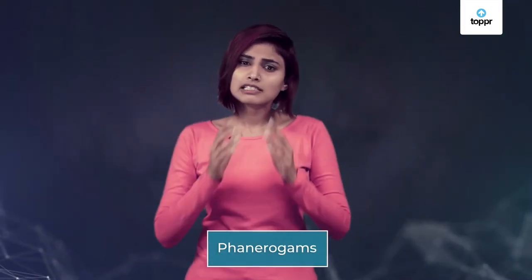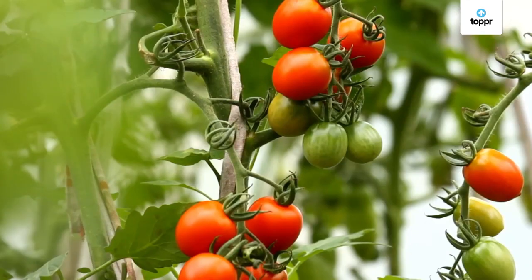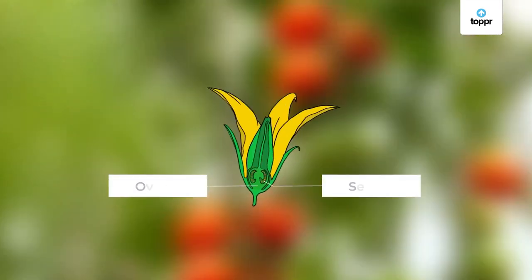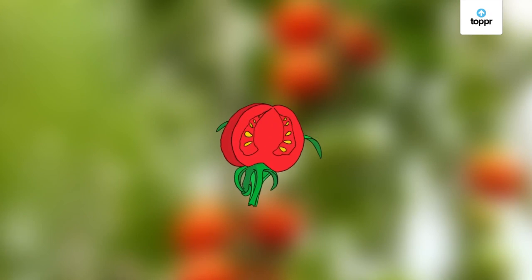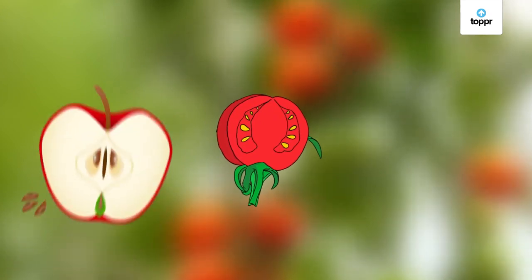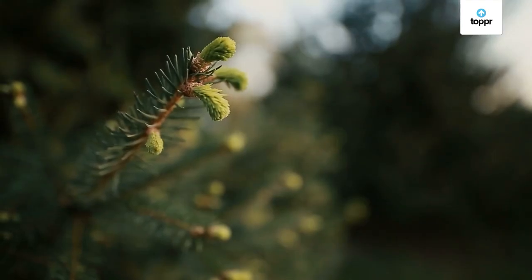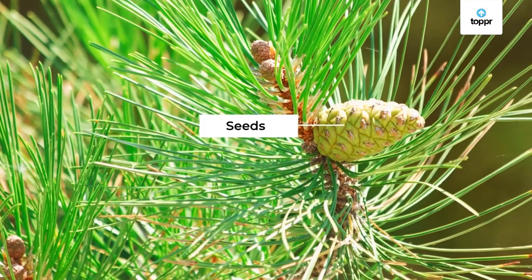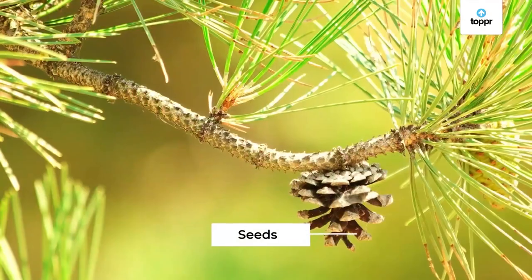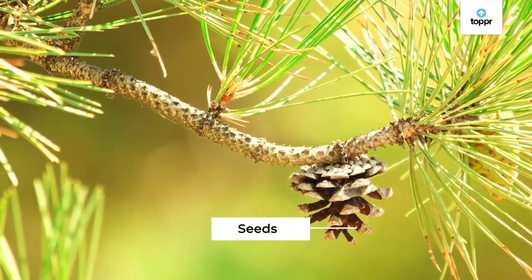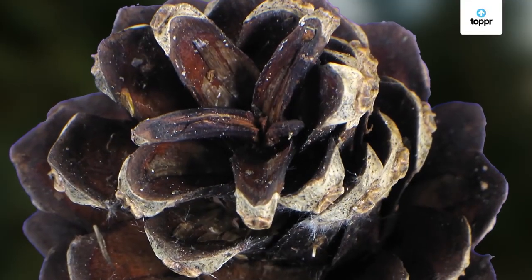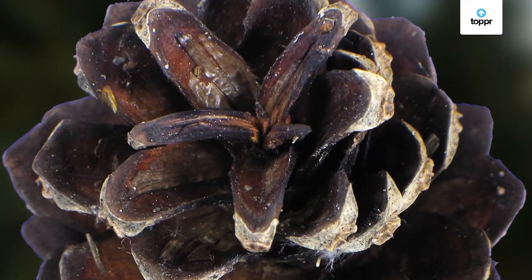Now in phanerogams, seeds can occur in two ways. One, it can be covered by an ovary which then develops into a fruit. These are the seeds we come across a lot — for example, fruits like apples, mangoes, and oranges. But there is a second way in which seeds can occur: they develop without being enclosed by an ovary, or in other words, without being enclosed by a fruit.